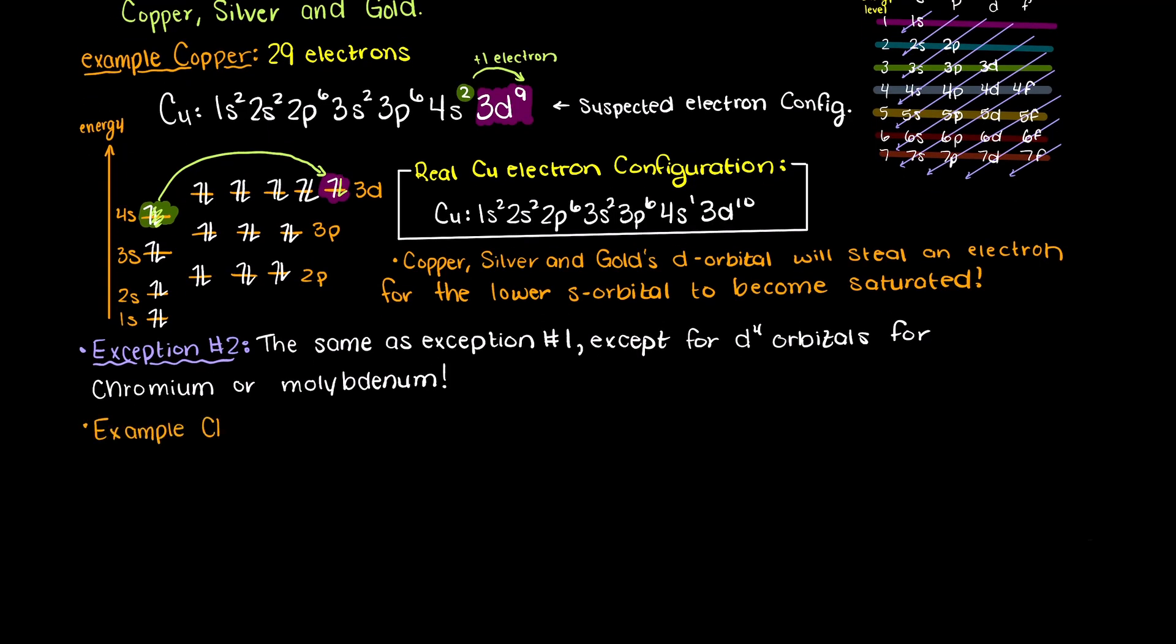So for an example here let's look at chromium, which has 24 electrons. According to Afbau principle, we would suspect an electron configuration of 1s2, 2s2, 2p6, 3s2, 3p6, 4s2, 3d4.